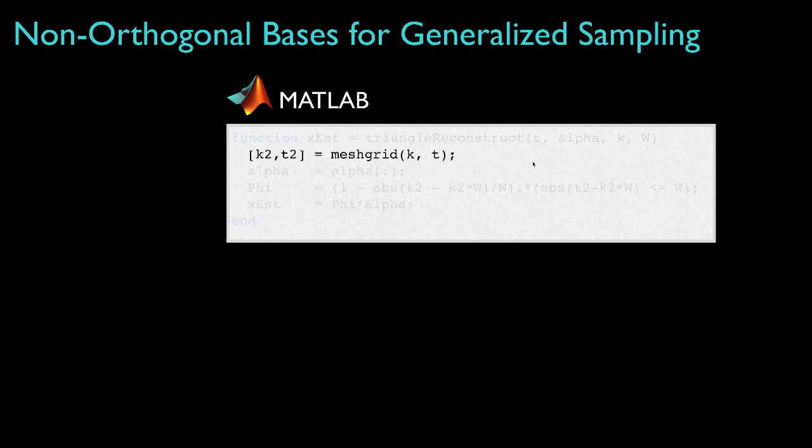To take advantage of MATLAB's ability to work with arrays, I'll first put the basis indices k and the time values t into two-dimensional indices with the mesh grid command. Then I'll make sure that the coefficient array is a column vector, and I'll create a matrix of the triangle basis functions. The rows of this matrix will correspond to time, and the columns will correspond to the basis indices.